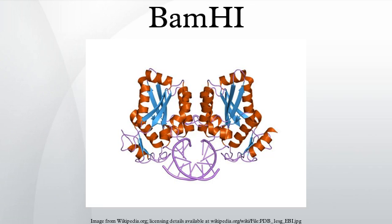In its unbound form, BamHI displays a central B-sheet which resides in between alpha helices. BamHI is an extraordinarily unique molecule in that it undergoes a series of unconventional conformational changes upon DNA recognition. This allows the DNA to maintain its normal B-DNA conformation without distorting to facilitate enzyme binding.